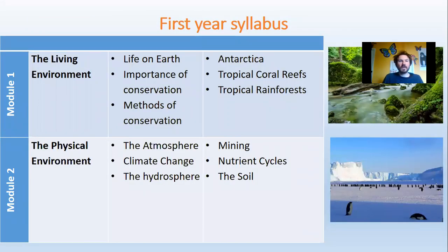In the first year we split into two. The living environment focuses on the conservation of biodiversity — thinking about what are the reasons why it's important to conserve the variety of living organisms on earth, and what sort of methods are available to us to help increase the likelihood that some of these organisms are going to survive in their natural habitats and outside of their natural habitats. There's a particular focus on applying that to some specific conservation contexts such as looking at Antarctica, tropical rainforests, and also tropical coral reefs.